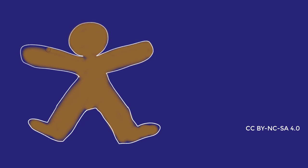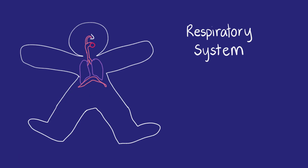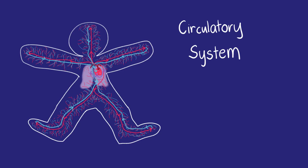You're probably already quite familiar with the main systems in the body: digestive, respiratory and circulatory systems, and you'll know these down to an organ level.